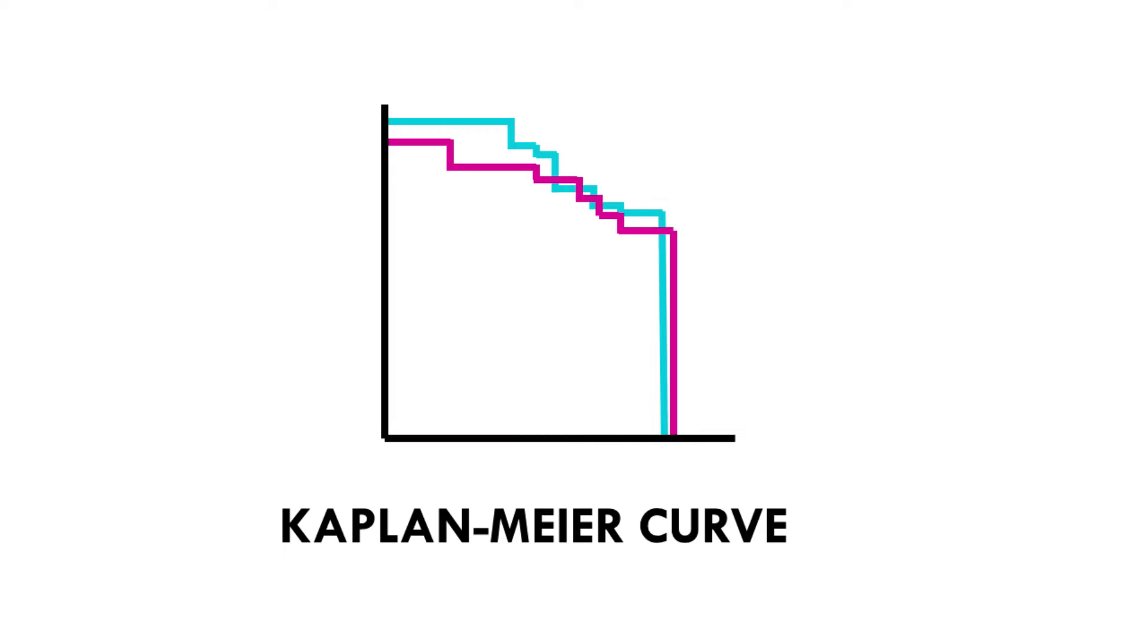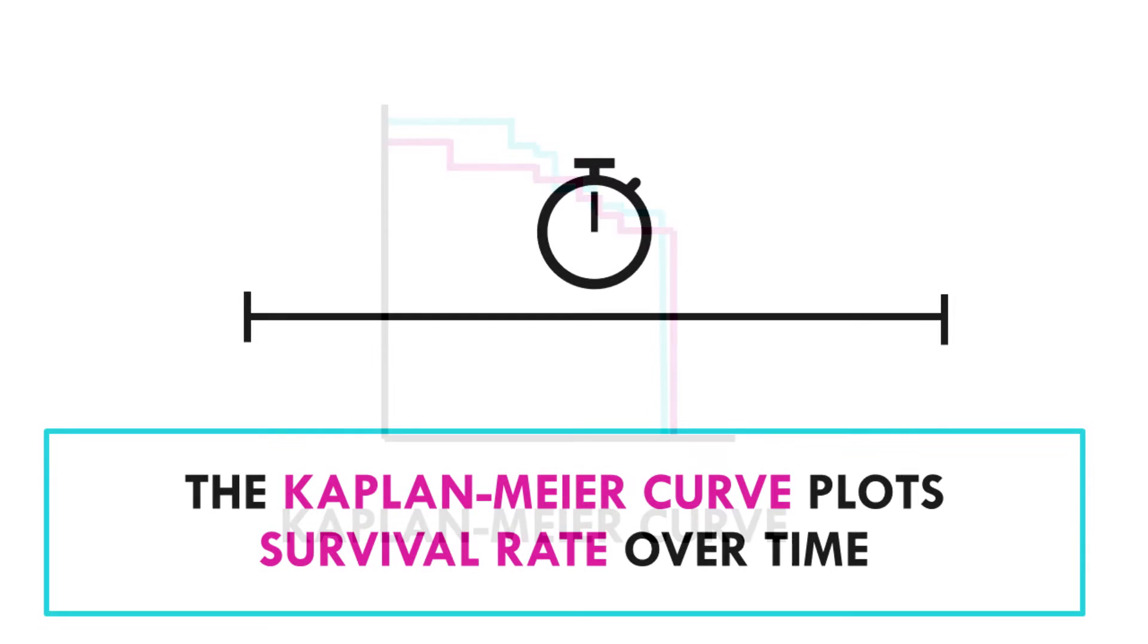So let's start by finding out what is a Kaplan-Meier curve. This survival curve is used to graphically represent the survival rate or survival function. In the x-axis we have time, and in the y-axis we plot probability of survival or the survival rate.